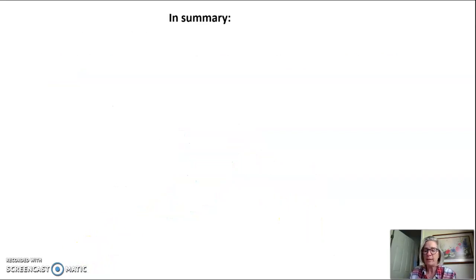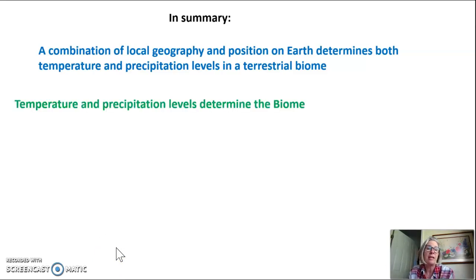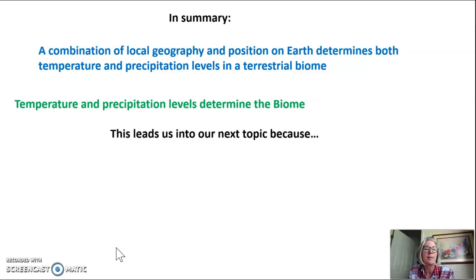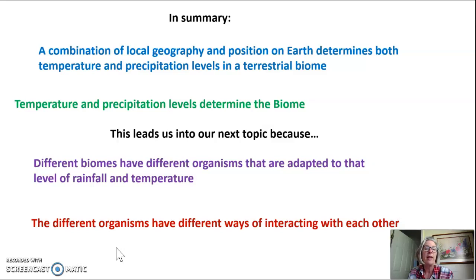In summary, a combination of local geography and position on Earth determine both the temperature and precipitation levels in a terrestrial biome, and those factors determine what biome it is. Different biomes have different organisms adapted to their levels of rainfall and temperature, and those organisms have very different ways of interacting with each other. That's all for tonight.